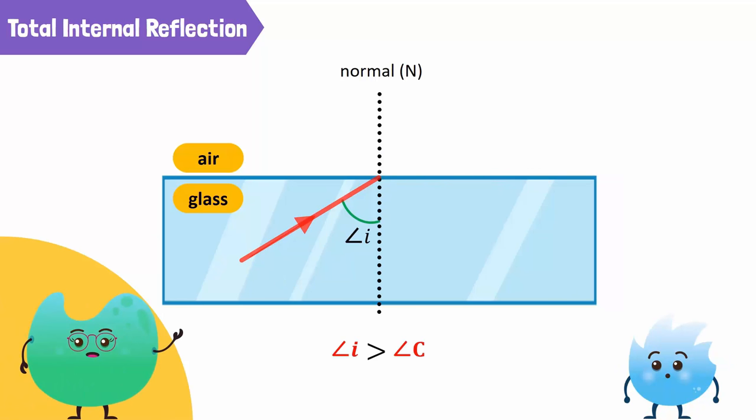But when the angle of incidence becomes greater than the critical angle, then the refracted ray does not enter the rare medium. Rather, it is reflected in the same medium. This is what we call total internal reflection.